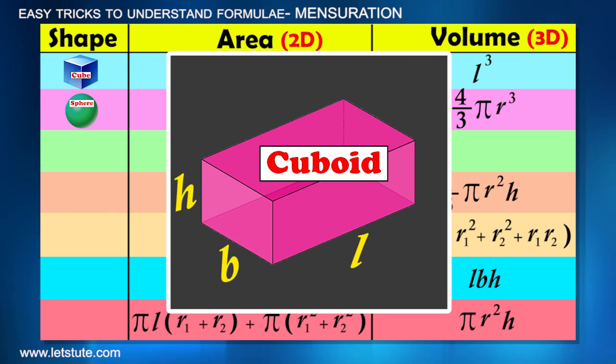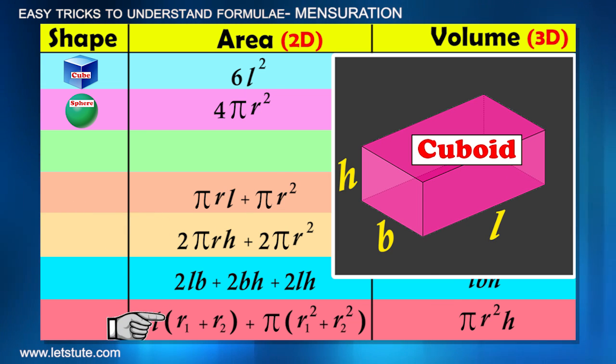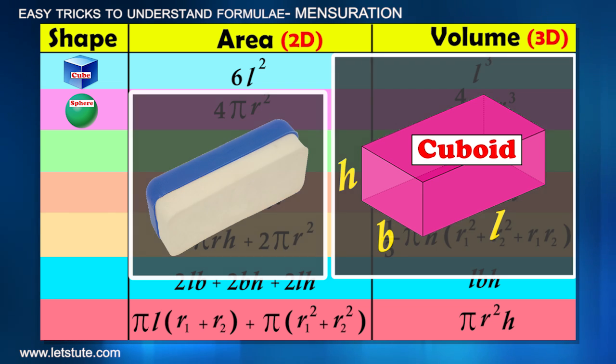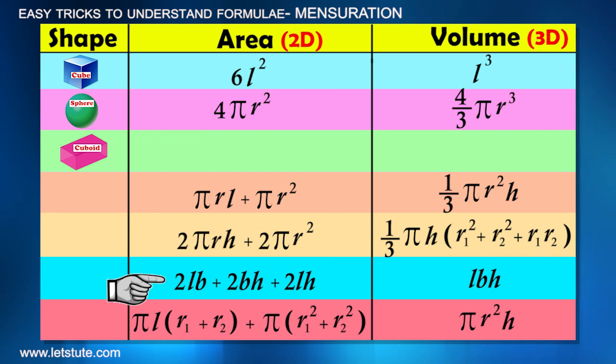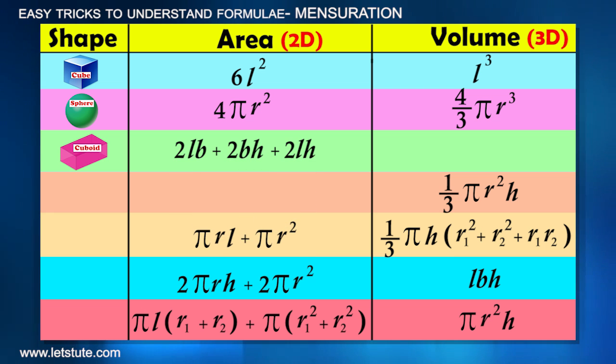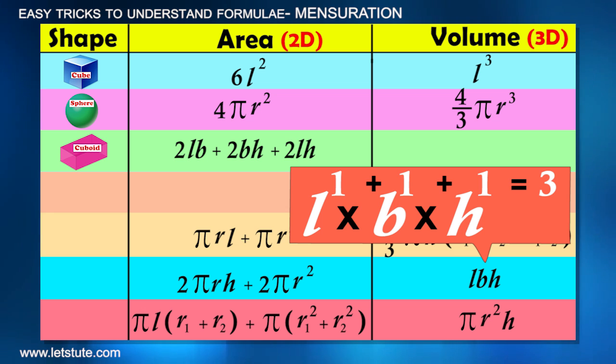Now let's take cuboid. It also has 6 surfaces as that of cube, but there is no formulae left that starts with 6, because its only opposite faces are equal in area, which looks rectangular. And an example of it is a duster. So look at the formula where you can see the area related to rectangle. This is 2LB + 2BH + 2LH, as 3 pairs of rectangular surfaces. And its volume will be L × B × H, that is LBH, as each variable has power 1, which adds up to give 3.